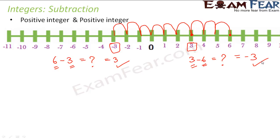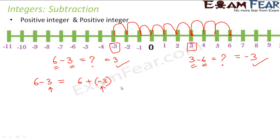Now there is another way of looking at subtraction of integers. When you say 6 minus 3, that is as good as 6 plus minus 3 — they both mean the same thing. So subtracting 3 from 6 means adding the additive inverse of 3 to 6. Additive inverse of 3 is minus 3. So if you write 6 minus 3 as 6 plus minus 3, it actually means addition of two integers, and you can follow the same rules.